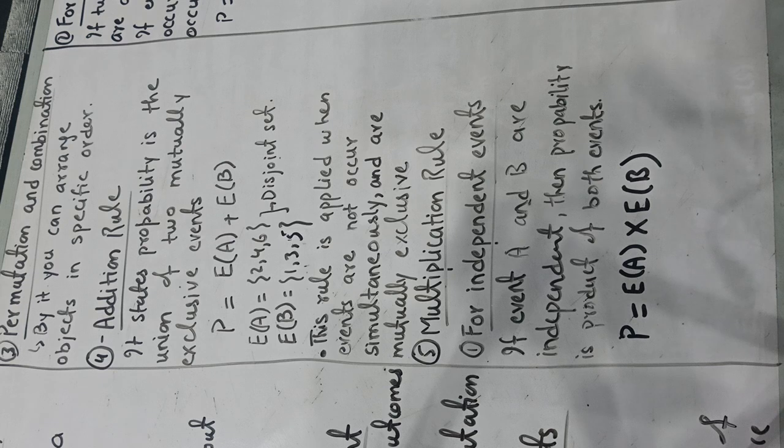The second type in the multiplication rule is the dependent event. If the two events A and B are dependent on each other, and one thing is that event A has already occurred, your event A has already occurred and now B is occurring.